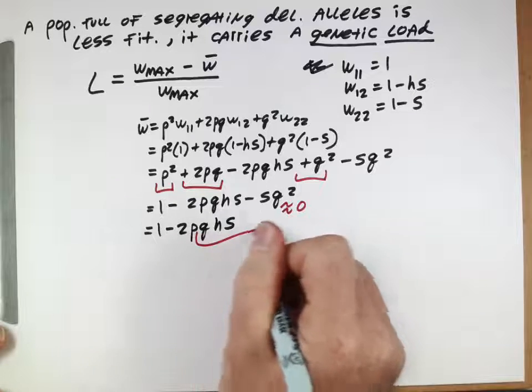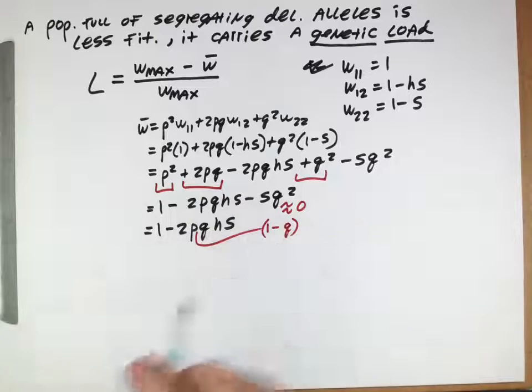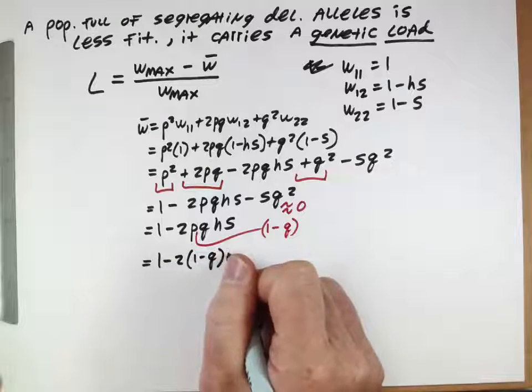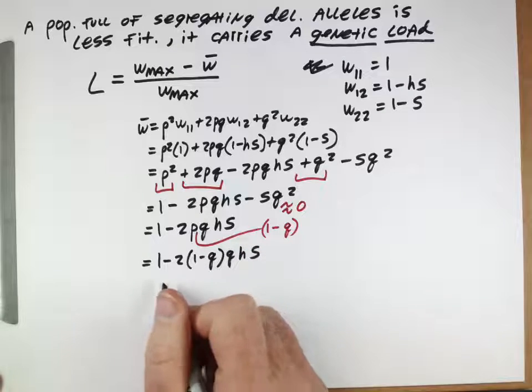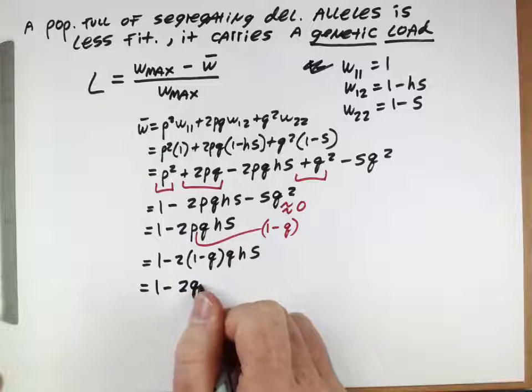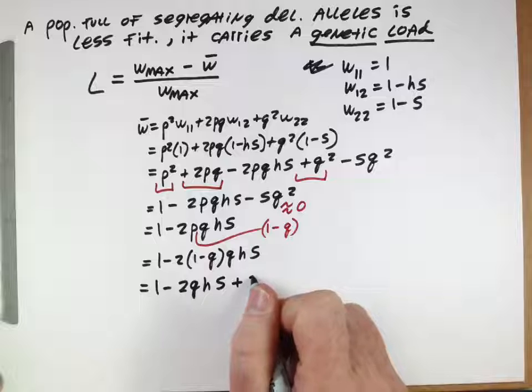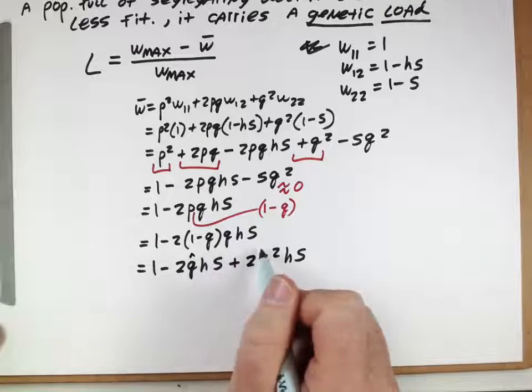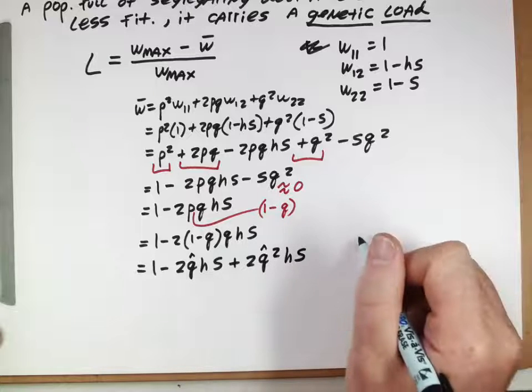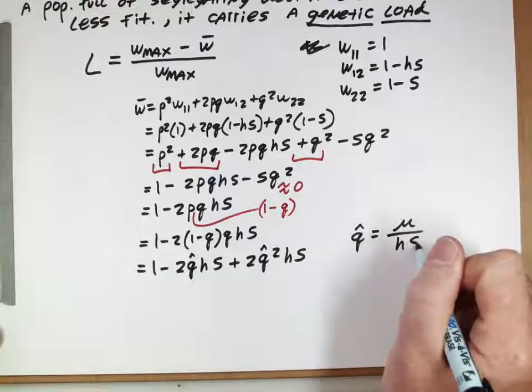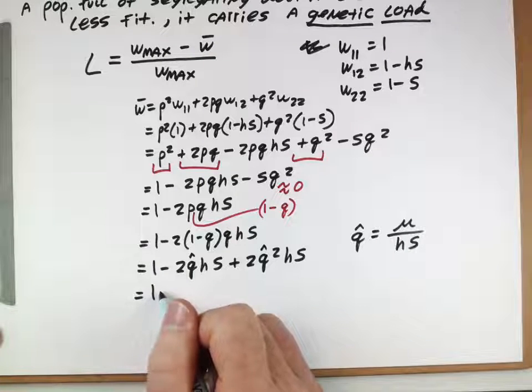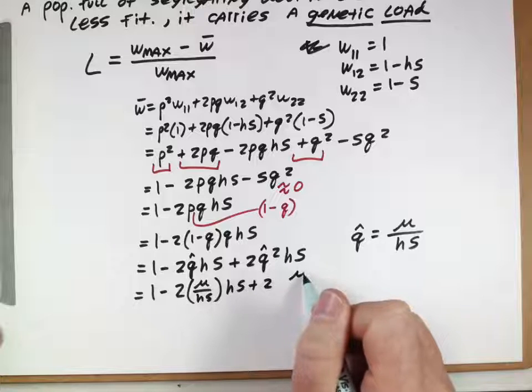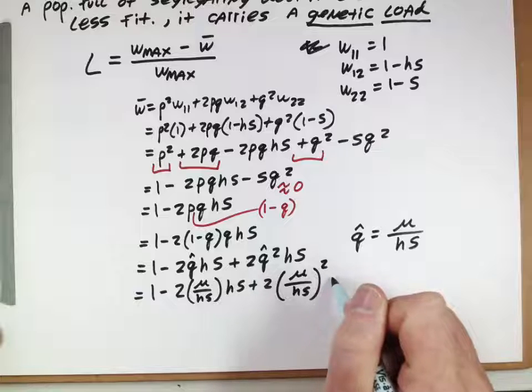So we get 1 minus 2pq hs. And we can substitute in, we know that p is equal to 1 minus q, so we can make that substitution: 1 minus 2 times 1 minus q times q hs. Multiplying that out, 1 minus 2q hs plus 2q squared hs. And we actually know what these q's are because we're solving this at equilibrium. So we know that those values there were mu over hs, so we can substitute that in there: 1 minus 2 mu over hs times hs plus 2 mu over hs squared times hs.